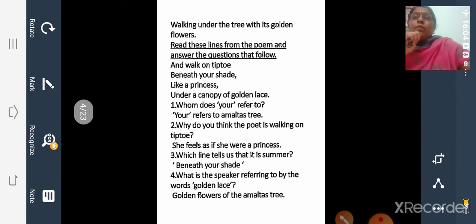Then read these lines from the poem and answer the questions that follow. 'And walk on tiptoe beneath your shade like a princess under the canopy of the golden lace.' Whom does 'you' refer to? You refers to Amaltas tree. Why do you think the poet is walking on tiptoe? She feels as if she were a princess. Which line tells us that it is summer beneath your shade? What is the speaker referring to by the words golden lace? Golden lace means golden flowers, golden flowers of the Amaltas trees.